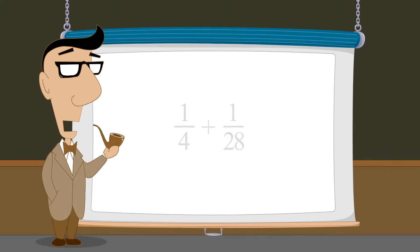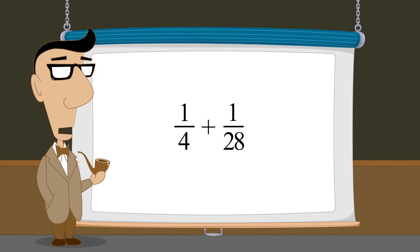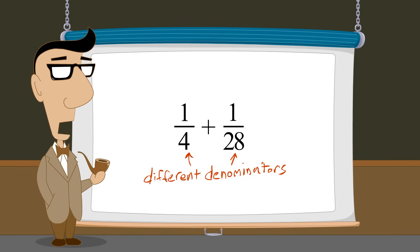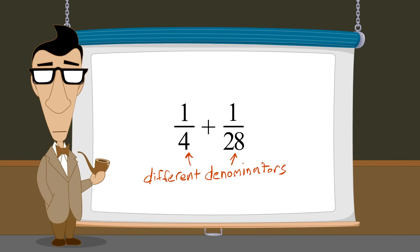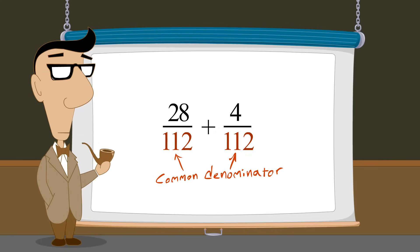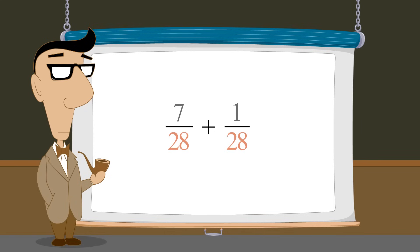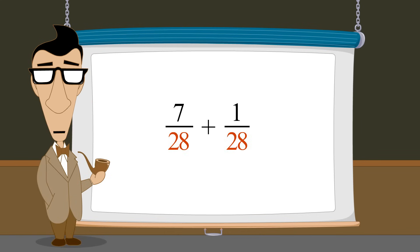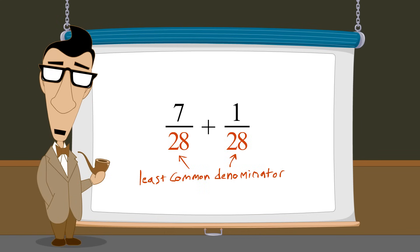We can see that in order to add or subtract fractions with different denominators, we need to create a common denominator. We have also seen that these calculations can sometimes be greatly simplified if we use the least common denominator.